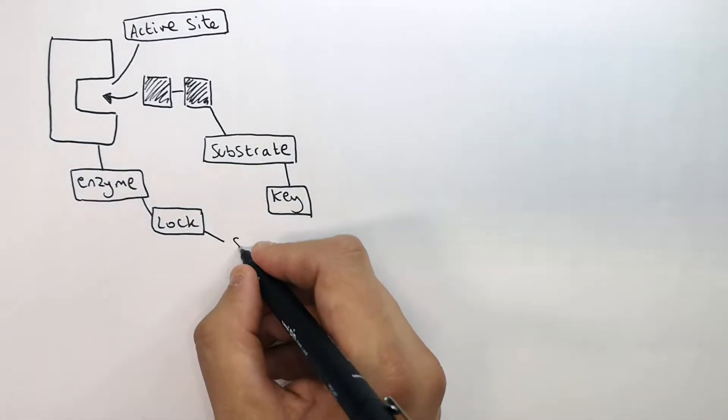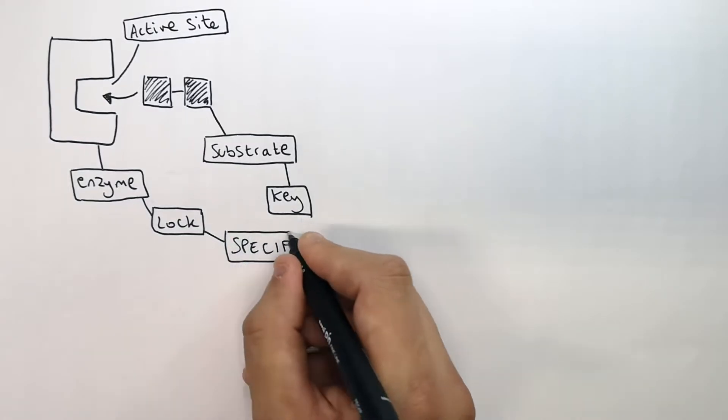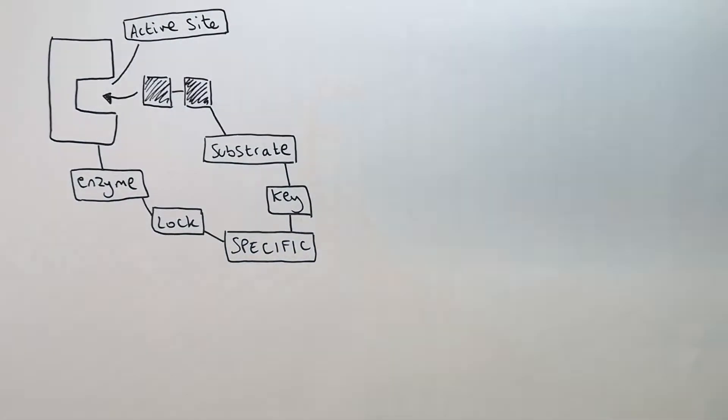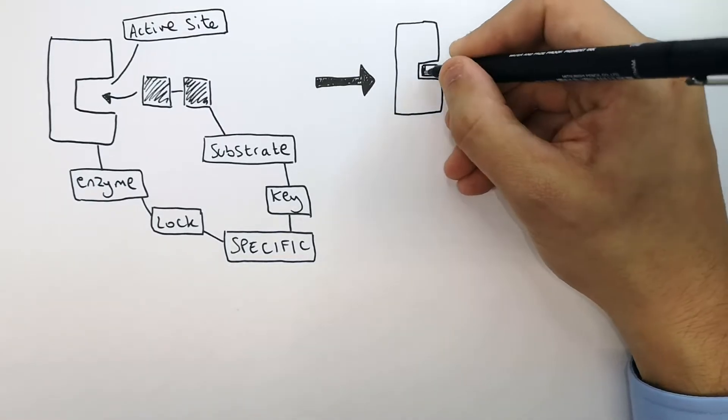The lock and the key are specific to one another. The enzyme and the substrate are specific to one another. Then what happens is an enzyme-substrate complex forms.